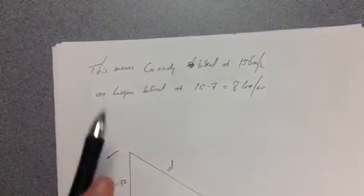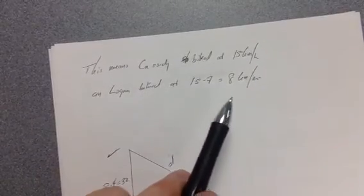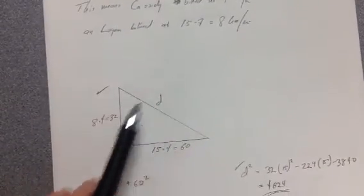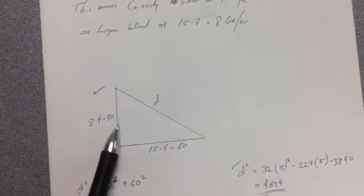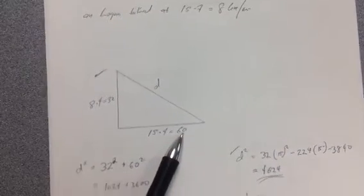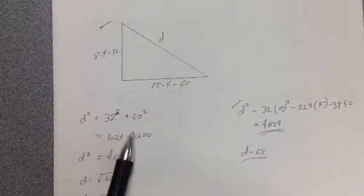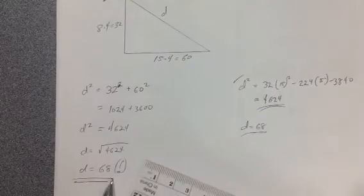That being the case, Cassidy biked at 15 kilometers per hour. Logan biked at 8 kilometers per hour. Just to verify, 8 times 4 is 32. 15 times 4 is 60. Put that into the Pythagorean theorem and you get 68.